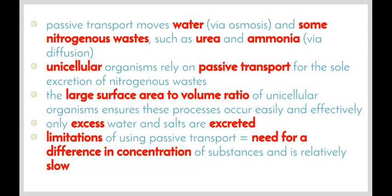Passive transport moves water via osmosis and some nitrogenous wastes such as urea and ammonia via diffusion. Unicellular organisms are able to rely on passive transport for the sole excretion of nitrogenous wastes because the large surface area to volume ratio of these unicellular organisms ensures that these processes occur easily and effectively. During the movement of substances with passive transport, only excess water and salts are excreted.